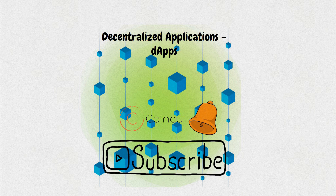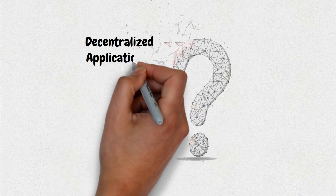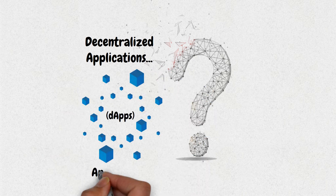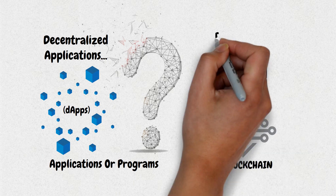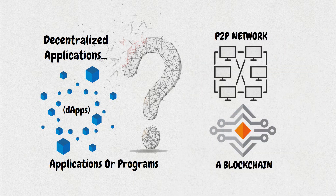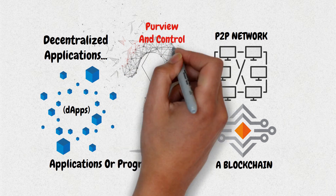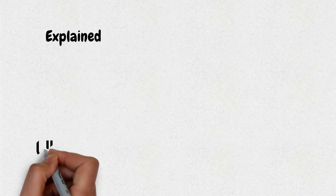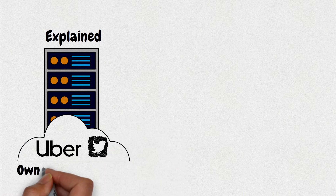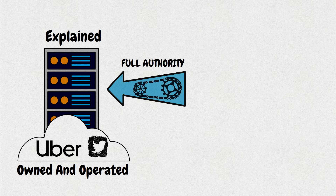What are decentralized applications? Decentralized applications, dApps, are digital applications or programs that exist and run on a blockchain or peer-to-peer network of computers, instead of a single computer, and are outside the purview and control of a single authority. A standard web app such as Uber or Twitter runs on a computer system which is owned and operated by an organization, giving it full authority over the app and its workings.